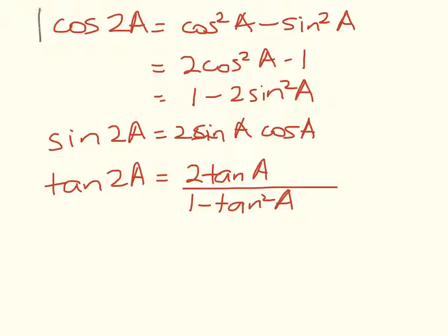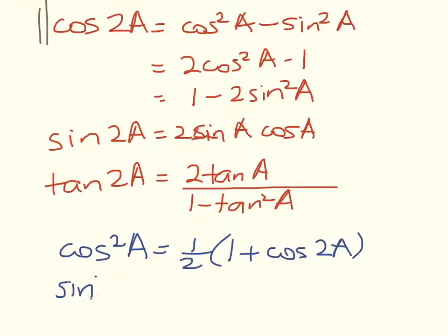Lastly, using this expression here we found a couple of nice ways to write down expressions for cos squared of A. So cos squared of A is equal to 1 half of 1 plus cos of 2A and sin squared of A can be written as 1 half of 1 minus cos of 2A.